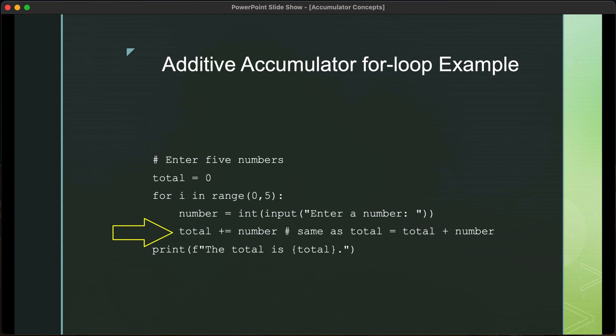So, if they enter 42, for example, for the number, that will be added to total. Total will then have the value of 42. The for loop will iterate five times. Each time the iteration occurs, the user will enter a new number. That number will be added to total. And then when the loop terminates, the total variable will, in effect, contain the total value of those numbers entered.